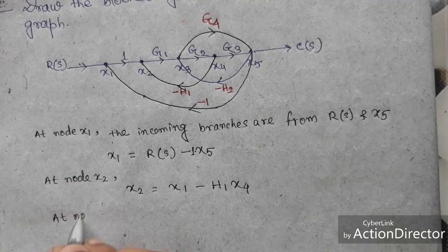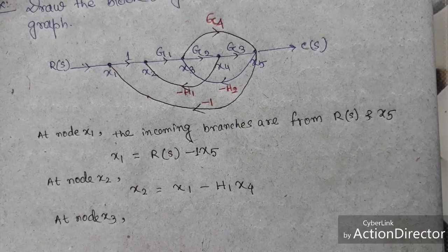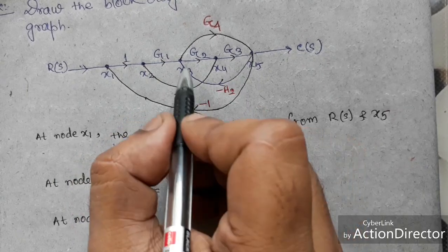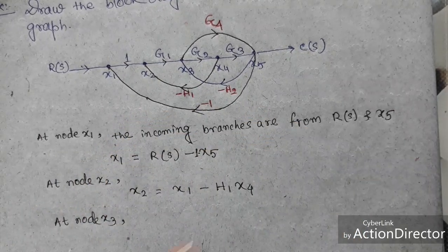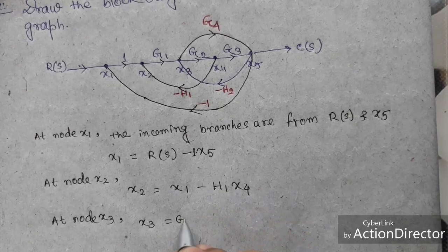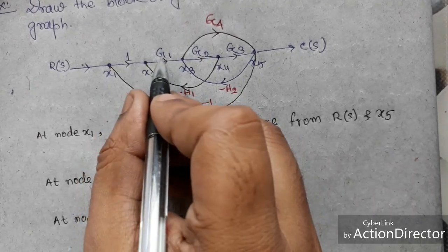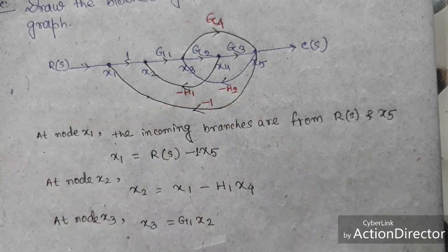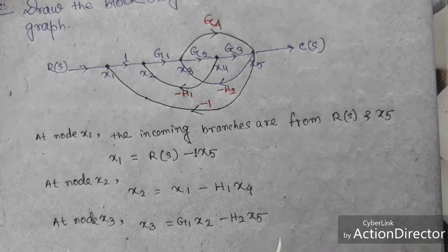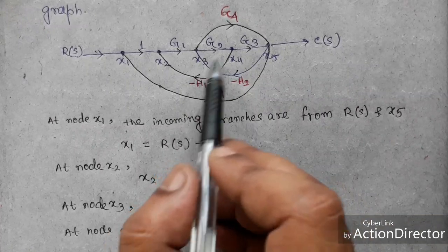At node x3, the incoming branches are x2 with path gain g1, and x5 with gain −h2. So the equation is: x3 = g1·x2 − h2·x5. At node x4, there is only one incoming branch: x3 with gain g2, so: x4 = g2·x3.